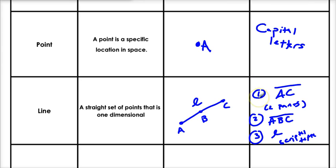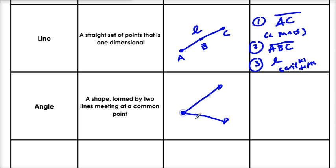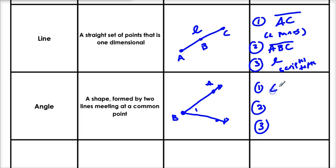Next one: we got a point, we got a line. Next one is an angle. An angle is formed by two lines meeting at a common point. So we got line one, and we got line two, and they meet at this common point right here. There are a few ways to name an angle. There are three ways: one, I could call it angle B, which is its vertex. Two, I could call it angle ABC, with the vertex in the middle. Or three, I could call it by the number — so this is angle one. Any of these are fine.